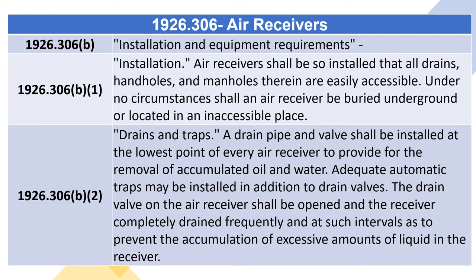Air receivers shall be so installed that all drains, handholes, and manholes therein are easily accessible. Under no circumstances shall an air receiver be buried underground or located in an inaccessible place. A drain pipe and valve shall be installed at the lowest point of every air receiver to provide for the removal of accumulated oil and water. Adequate automatic traps may be installed in addition to drain valves. The drain valve on the air receiver shall be opened and the receiver completely drained frequently to prevent the accumulation of excessive amounts of liquid in the receiver.